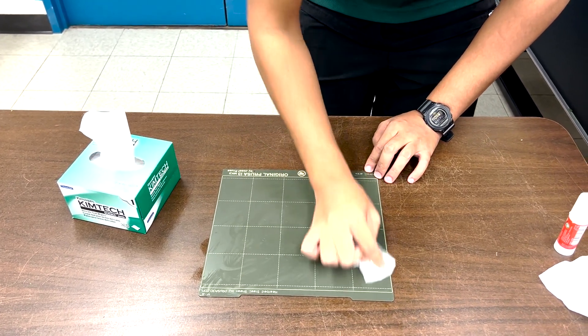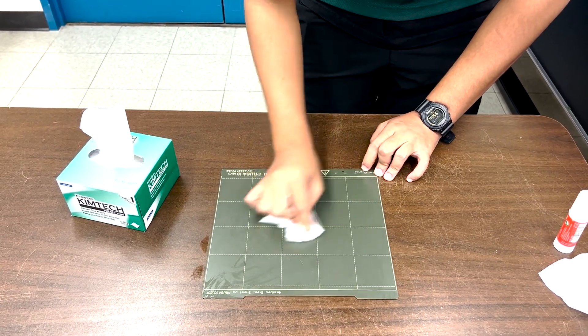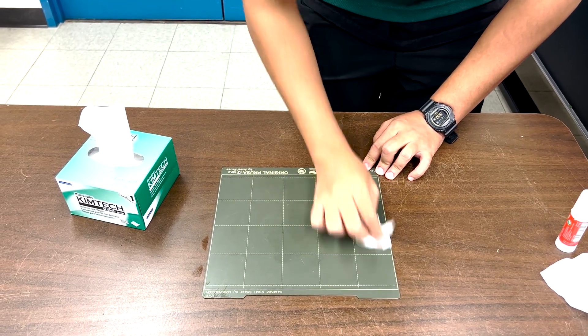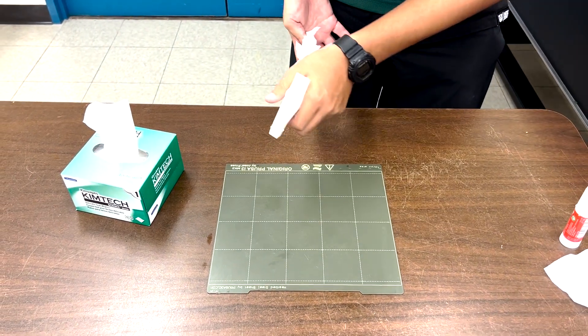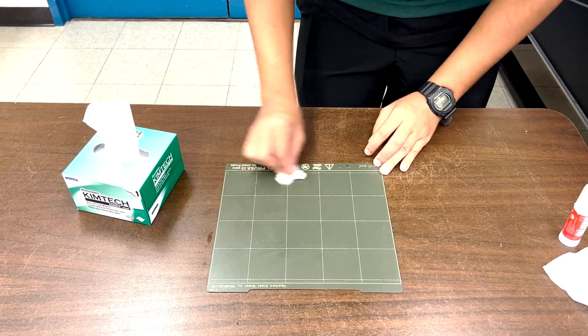You want to keep redoing this process until there's no sticky residue left on the build plate at all. This includes spraying IPA again and continuing to wipe the build plate.